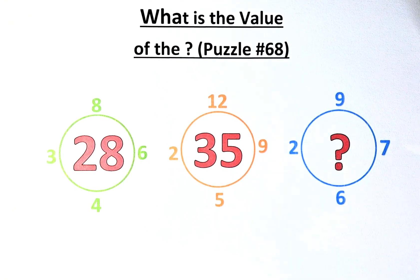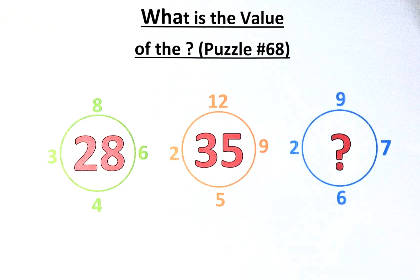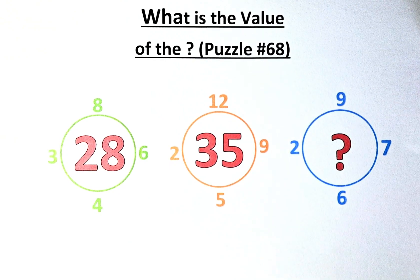And in the final blue circle, the numbers are 2, 9, 7 and 6 and we need to know what number can be represented by the question mark.